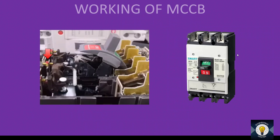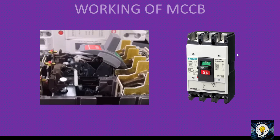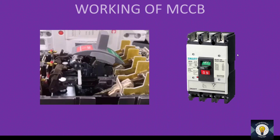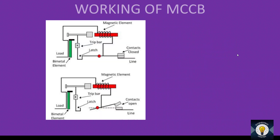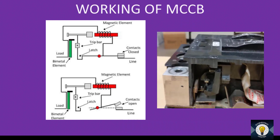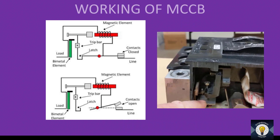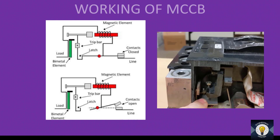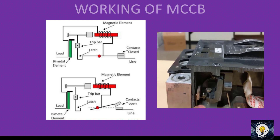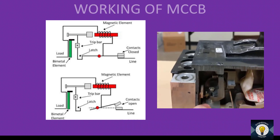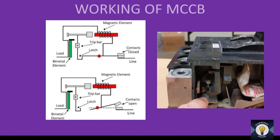Due to the heating and bending of the bimetallic strip, it activates the triggering mechanism and the MCCB is tripped. For short circuit tripping, we use a solenoid-type arrangement. There is a coil with a piston inside. When current passes through the coil, due to electromagnetic force, the piston moves to the center. This triggers the contacts and the circuit breaker is tripped.